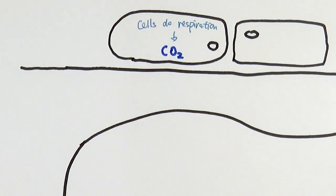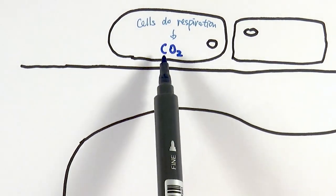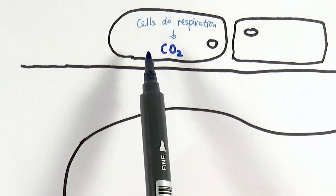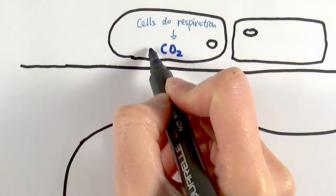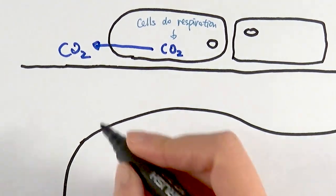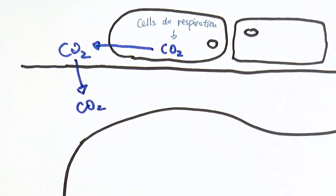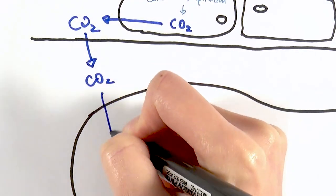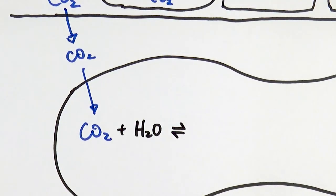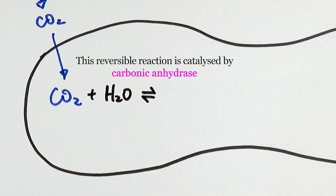At the very beginning, cells obviously carry out aerobic or anaerobic respiration, and as a result they produce carbon dioxide and water. First of all, inside the cells the carbon dioxide will diffuse out into the tissue fluid, then diffuse into the plasma, and finally diffuse into the red blood cell.